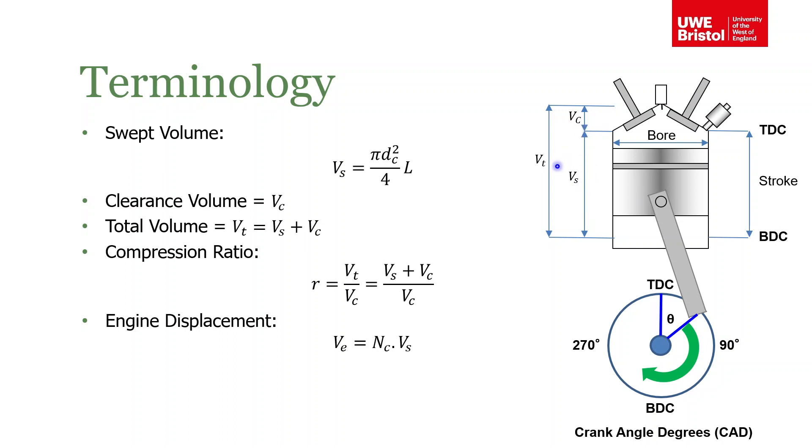If you add the swept volume to the clearance volume, then you get the total volume of the cylinder. If you look in automotive books and you're looking at pressure-volume diagrams and things, they'll often be referred to in terms of crank angle degrees. The crank is rotating around and around—it does 360 degrees, so we've got 360 crank angle degrees for one revolution.